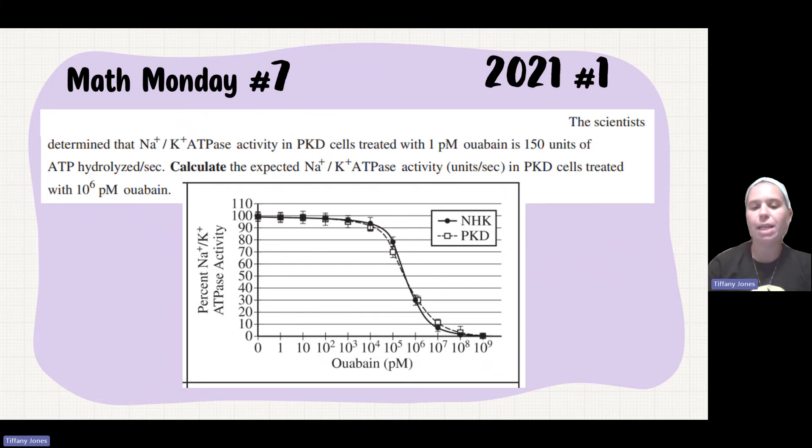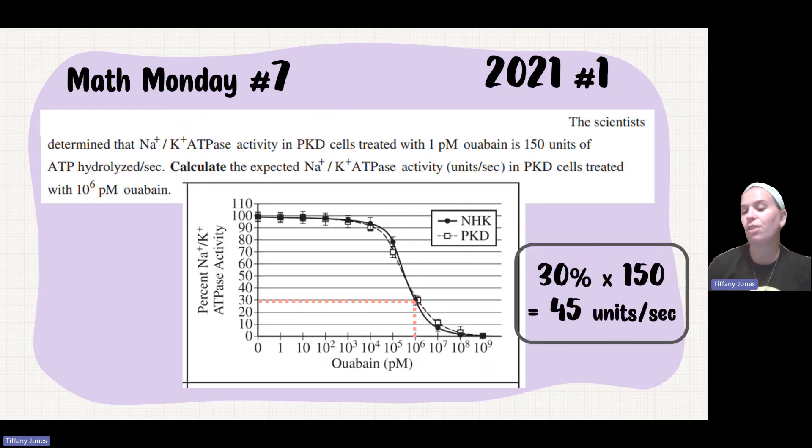And so if we're looking at the graph, we can see that 10 to the 6 corresponds with 30%. And so we're told that 1 picomole has to do with 150 units. So if we do 30% of that, we'll find that it is 45 units per second. And that is our answer.